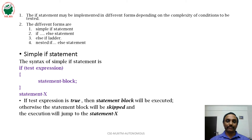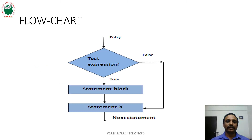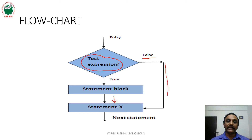First, observe the simple if statement. In the simple if statement, if the test expression or condition is true, then the statement block present in the if block is executed. Otherwise, by skipping that statement block, control directly goes to statement x. In the flowchart, the test expression is verified first. If true, the statement block is executed and control goes to statement x. If false, the control directly goes to statement x without executing the statement block.